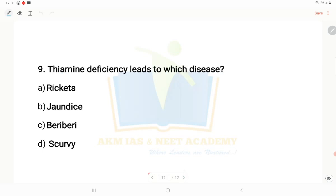Ninth: Thiamine deficiency leads to which disease? Thiamine is vitamin B1. Option C, beriberi. It's mostly seen in alcoholics.